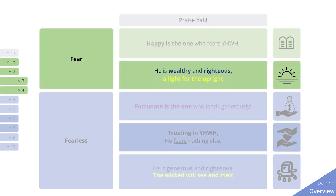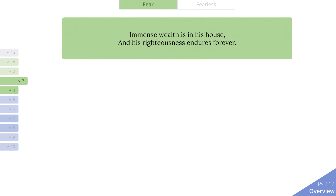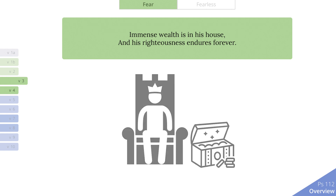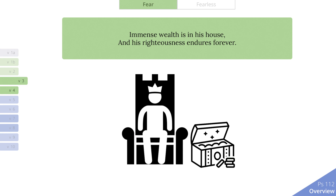Wealthy and righteous. The next segment shows how the Lord responds to the one who fears Him. Verse 3. Immense wealth is associated especially with kings in the Old Testament. Wise and successful kings gain that wealth in a godly fashion, and the wealth therefore serves as evidence precisely of this man's wisdom and success. That wisdom and success derive from something much deeper, however — His righteousness.